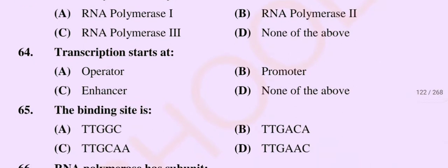Question number 64: Transcription starts at — Option A: operator, Option B: promoter, Option C: enhancer, Option D: none of the above. So the correct option is Option B, promoter.